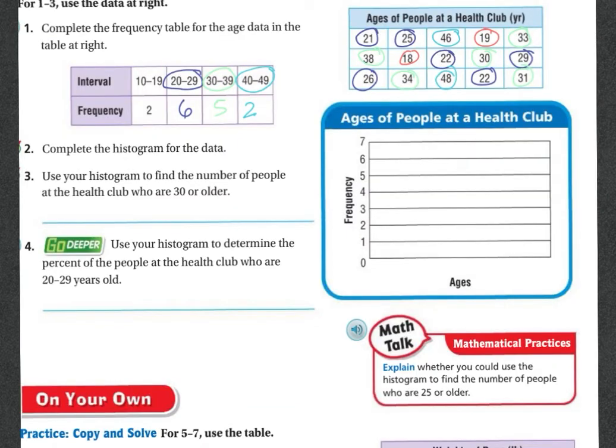So next they want us to complete the histogram. So let's go ahead and label this out. We're going to do 10 through 19 is going to be here, 20 through 29, 30 through 39, and 40 through 49. So we have 2 ten through 19s, so that means my bar is going to go up here to the 2. I'm going to color it in. Then we have 6 twenty through 29s, so that means my bar is going to go all the way up here to the 6. Let's color it in.